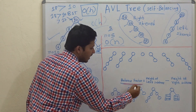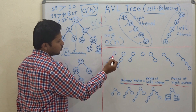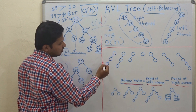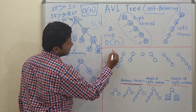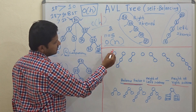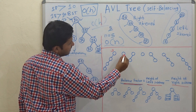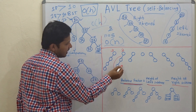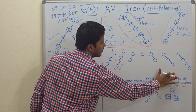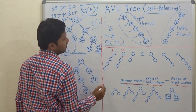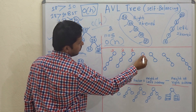Now let's see what the balance factor is. The balance factor of a node is: height of left subtree minus height of right subtree. For the root of the left-skewed tree: left subtree height is 3, right subtree height is 0, so balance factor is 3. For the next tree, 2 minus 0 equals 2. Then 1 minus 0 is 1, then 0 minus 0 is 0.